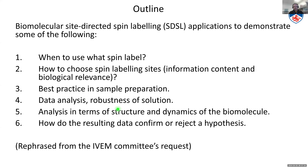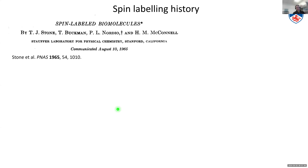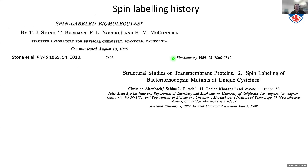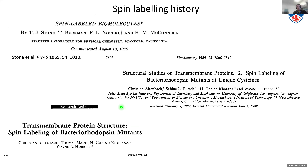Spin labeling is actually quite old. The original work by McConnell introduced the label into biomolecules. What is mostly exploited today is attaching it specifically to a site, which goes back to Wayne Hubble's seminal papers in the late 1980s and 1990, where the spin label was attached to a specific residue in the protein sequence. That means you don't just have a label somewhere — you control where you put it, and can derive much more useful information.